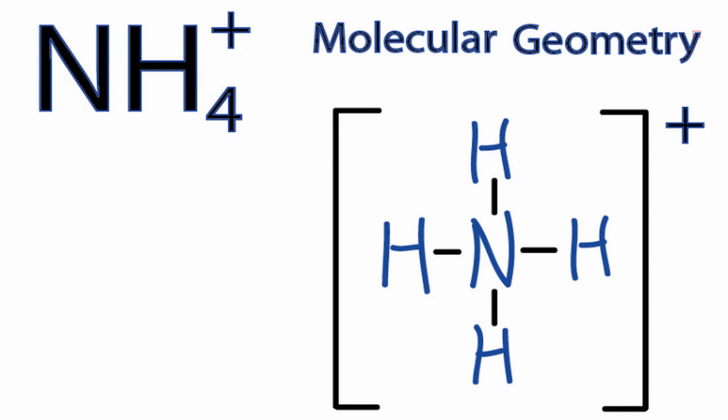To write the molecular geometry for NH4+, we first need to look at the Lewis structure. When we do so, we see that the nitrogen is surrounded by four hydrogens,